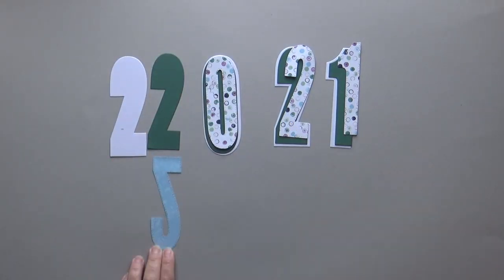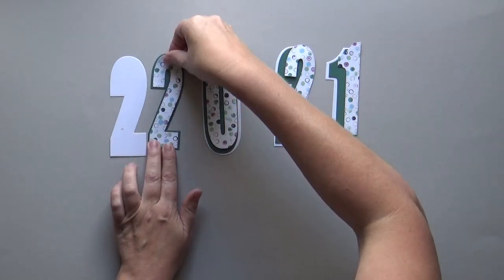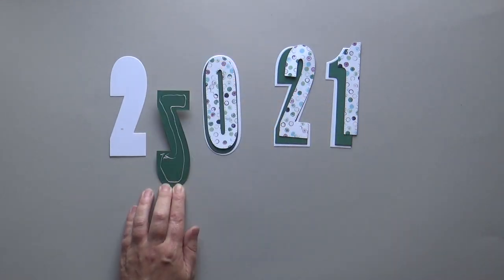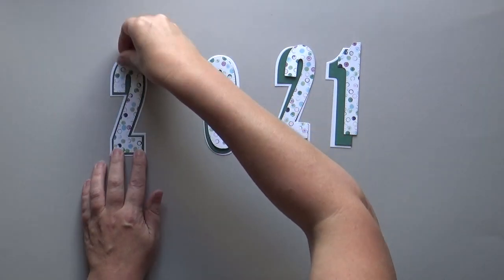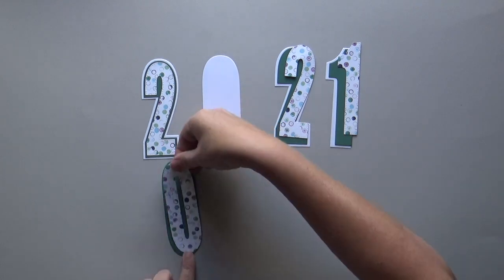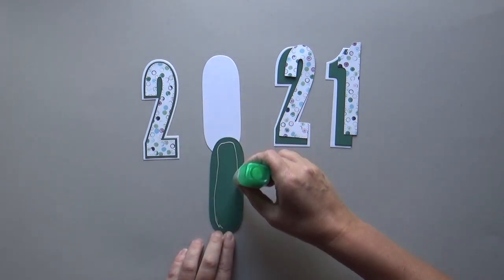Glue the solid numbers on the shadow numbers. Glue the shadow number on the base number. I don't use 3D foam blocks because all numbers will be inside the card and I don't want this part to be too thick.